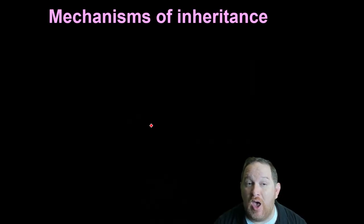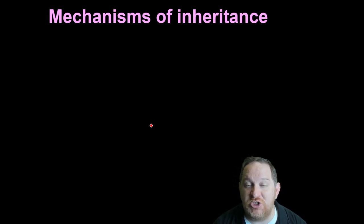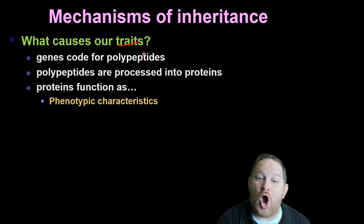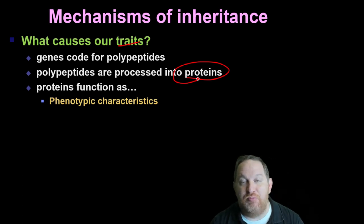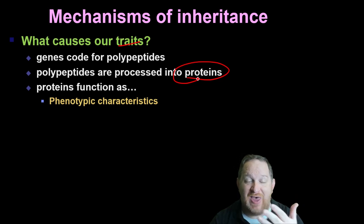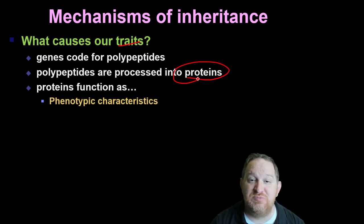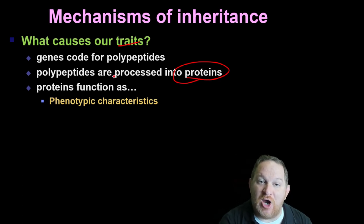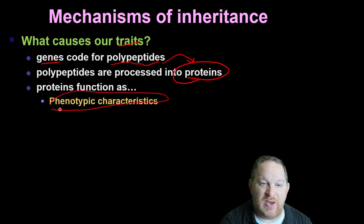Before we can talk about how we could design babies with certain traits, we first need to be reminded of a little biology — how we inherit certain traits to begin with. Our traits are caused by proteins. If I have brown eyes, that's because I have certain proteins that reflect those colors of light. The same goes for height or intelligence. A lot of that goes back to genes that code for the proteins that make up my hair, my brain, or whatever.